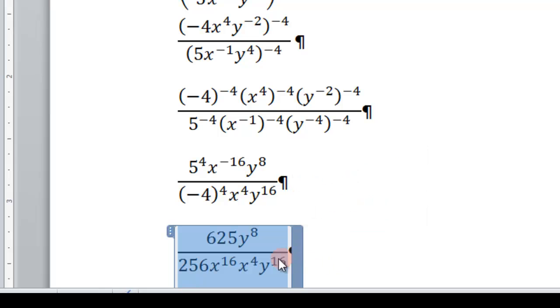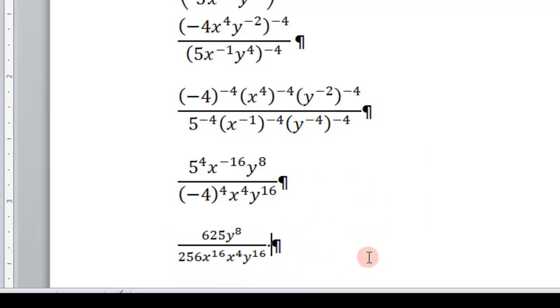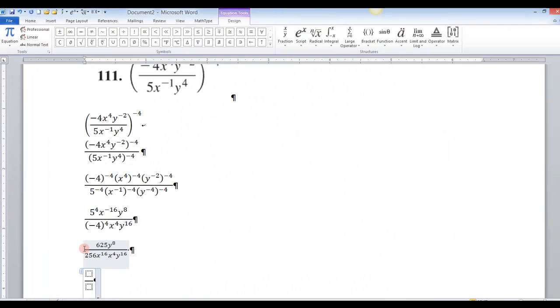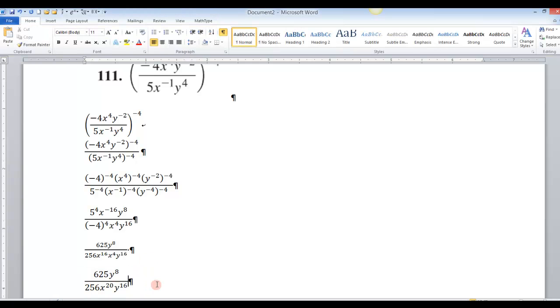And then last of all, if I wanted to, I can just continue this on. Let's go ahead and just copy the whole thing. And then I will just combine these together. Make the x to the 16th times the x to the 4th and x to the 20th. And then that'll get rid of that.